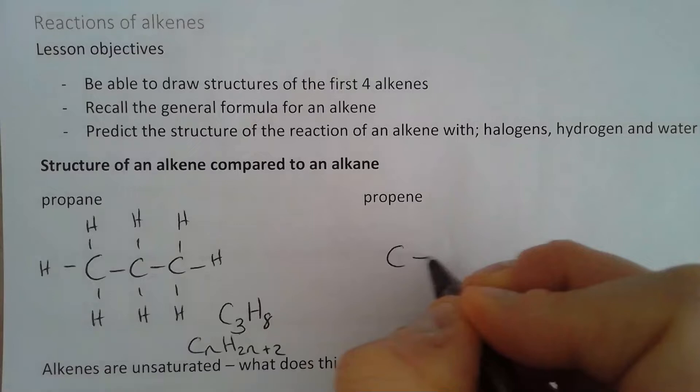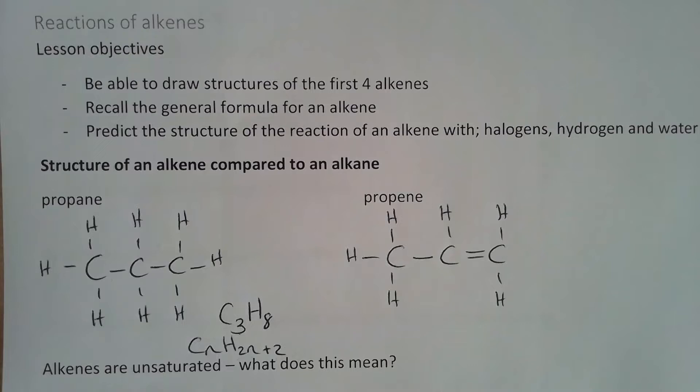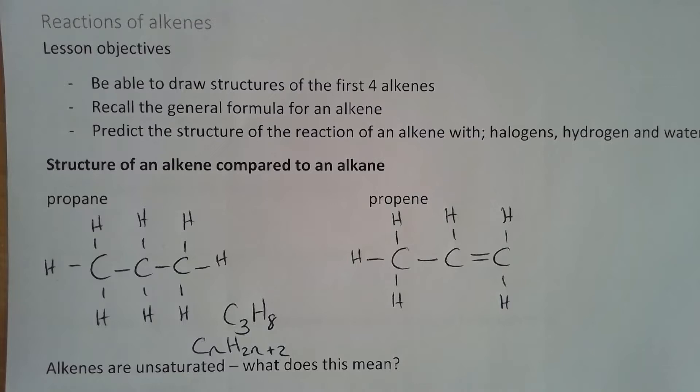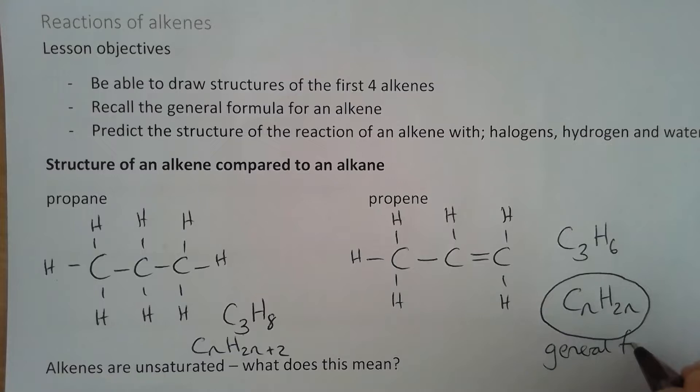An alkene has a double bond in it. There is only one double bond between two carbon atoms in any alkene. If there are more than one double bond, it's a different type of compound called a diene, and if there are three, a triene. But all we're interested in at the moment is alkenes. This has the formula C₃H₆, so it has the general formula CₙH₂ₙ — that's something we need to know.